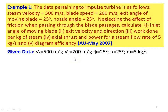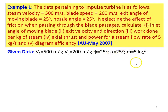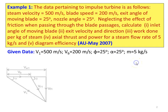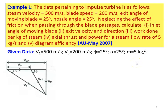Read the problem and write down the given data. V1, velocity of the steam, is 500 meters per second. Blade velocity VB is 200 meters per second. Exit angle of the blade β equals 25 degrees. Nozzle angle alpha equals 25 degrees. Mass flow rate is 5 kilograms per second.